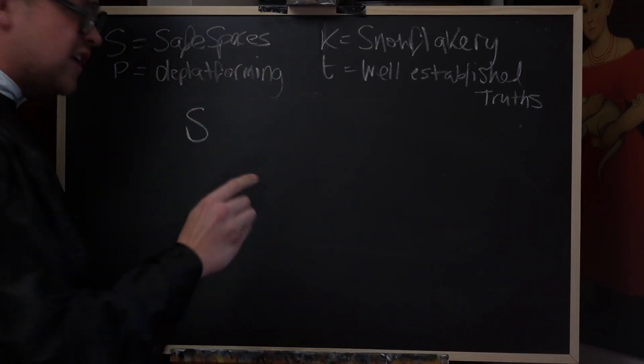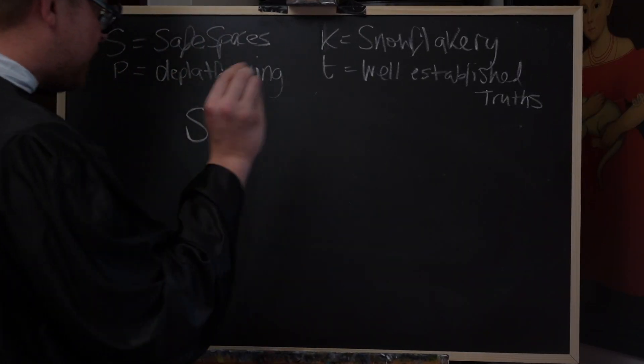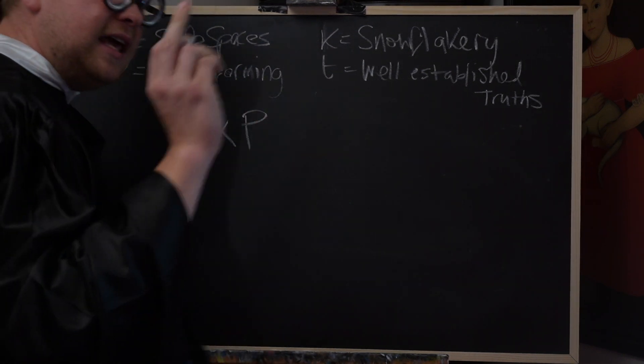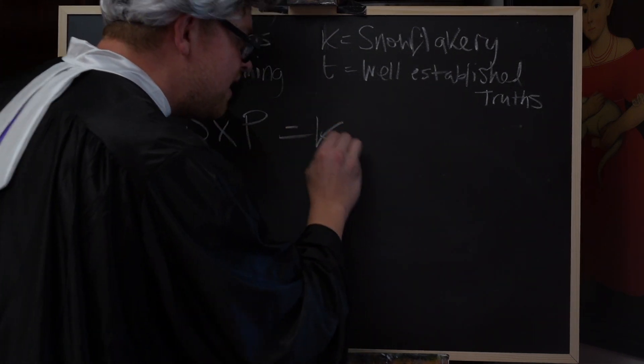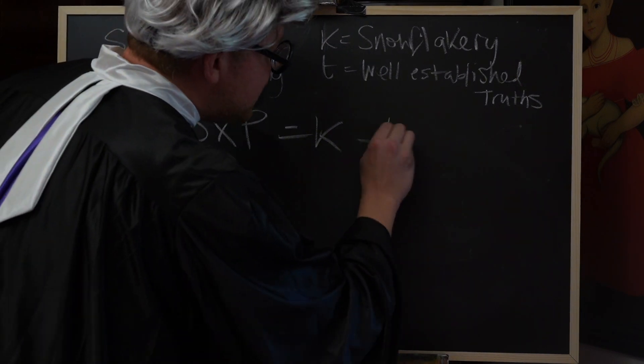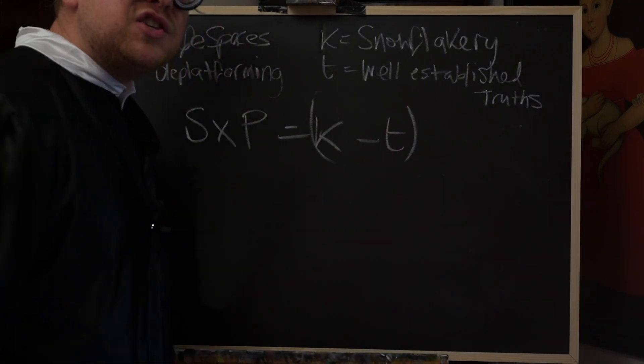If we take safe spaces, S, and we multiply by deplatforming, P, equals K, snowflakery, minus T, well-established truths.